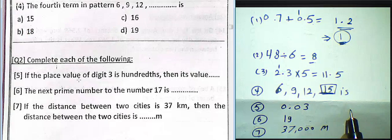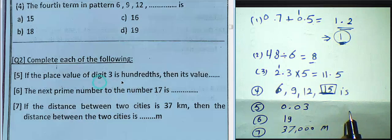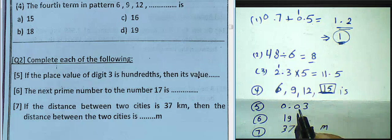Question 2 revisited: if the place value of digit 3 is in the hundredths, then its value will be 0.03. Three in the hundredths place equals 0.03.